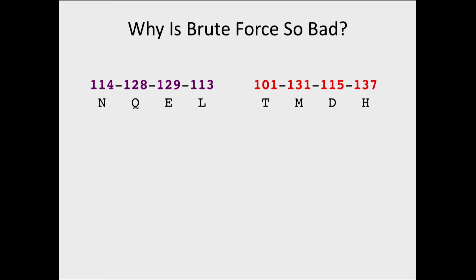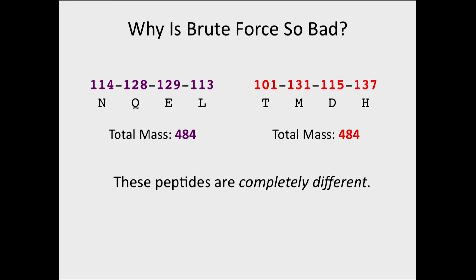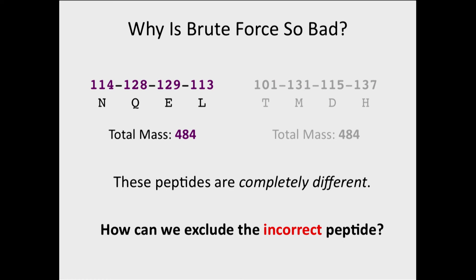Here's a peptide, NQEL, that we'll start working with, and another peptide, TMDH. The total mass of NQEL is 484 and the total mass of TMDH is 484. But they're completely different — they don't share any of the same amino acids, and by extension they're not going to have any of the same subpeptides. So we need a way to exclude TMDH completely.